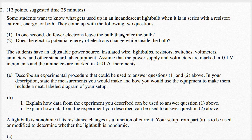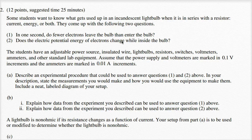The first question is really a measure of current, because current is how much charge per second is going through a particular part of the circuit — you could also think of it as electrons per second. So current measures the first question, and electric potential energy of the electrons is voltage. Does the voltage change? Is there a voltage drop when we go from one side of the bulb to another?